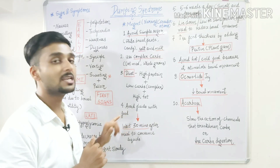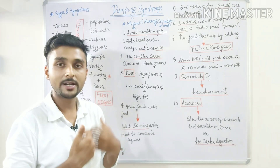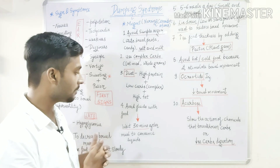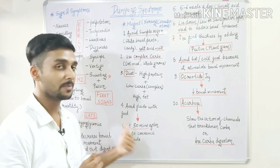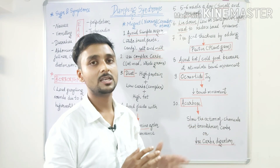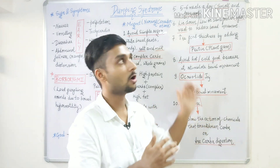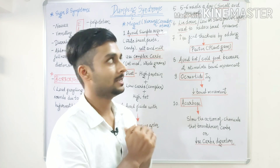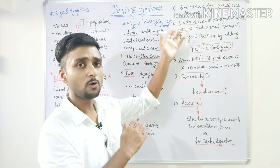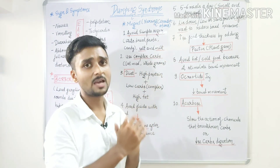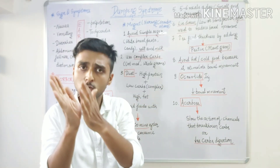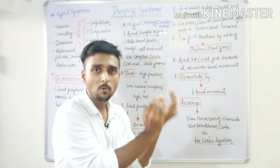We should not give the patient fluids with food, because the fluid level in the intestine is already increasing due to hypertonic food. After eating, the patient should wait 30 minutes before consuming liquids. We should give the patient five to six small, frequent meals divided throughout the day. After taking food, we advise the patient to lie down in a low or semi-Fowler's position, which will decrease bowel movement and allow food to slowly pass from the resected stomach to the small intestine.